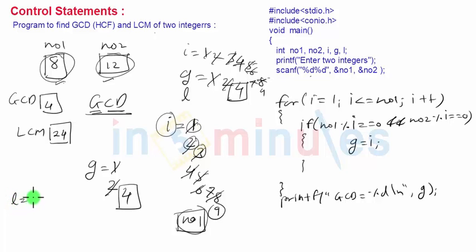Now LCM is given by formula: LCM is equal to number 1 into number 2 divided by GCD. For example you can see here 8 into 12 divided by 4 will give me 24, that is LCM. So the formula for LCM is L is equal to number 1 into number 2 divided by GCD.